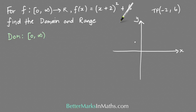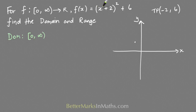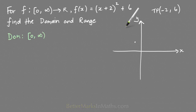The parabola is upright because if you expanded the bracket you would have a positive x² term. If there was a minus in front, that would make the x² term negative and it would be an upside-down parabola, but because it's positive, it's going to be upright — so the parabola looks like this.